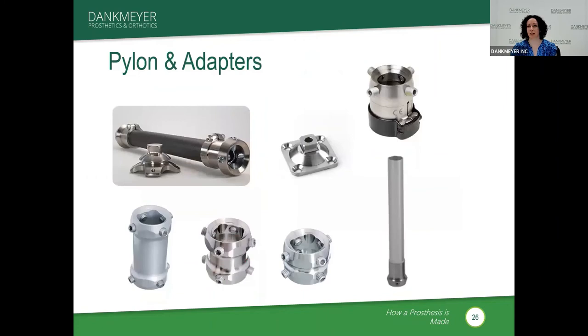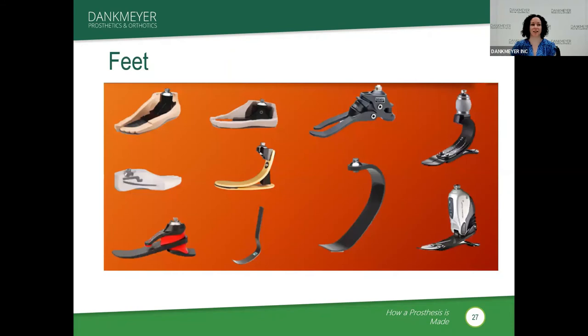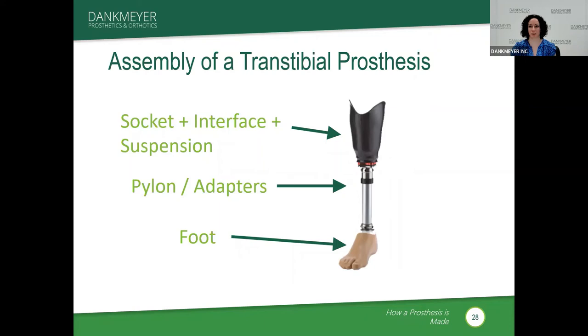Then we pick the right pylons and adapters to assemble it to the correct height, matching the patient's contralateral side. And then there are feet — while picking a foot is beyond the scope of this lecture, there are many different feet on the market, ranging from more stability to high-level energy return. We then go to assembly: the socket is attached to the pylons and adapters, and then to the foot. We can also put a cosmetic cover over the internal components so it looks more like their contralateral side.